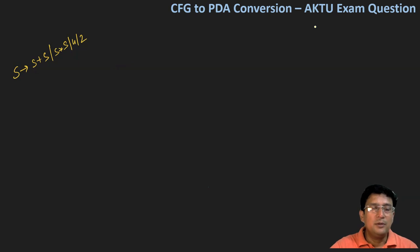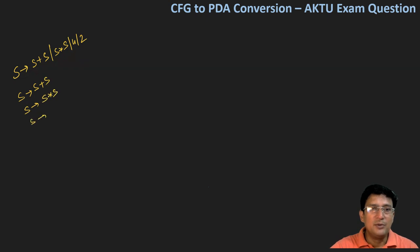तो इसको हम PDA में convert करेंगे, लेकिन PDA में convert करने से पहले इसके production symbols को separately लिख देता हूँ. So S produces S plus S, then S produces S multiplied with S, then S produces 4, and S produces 2.